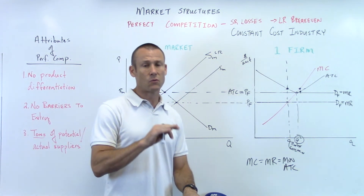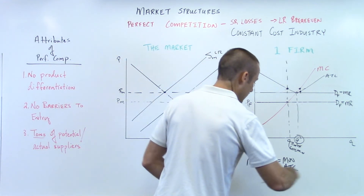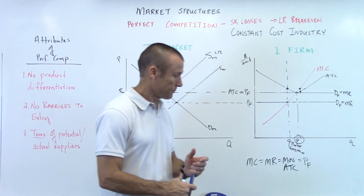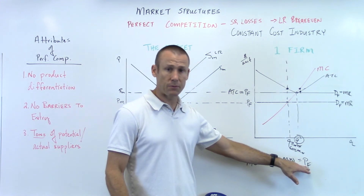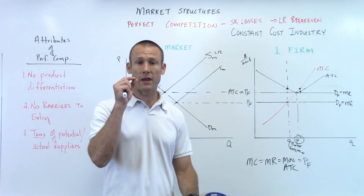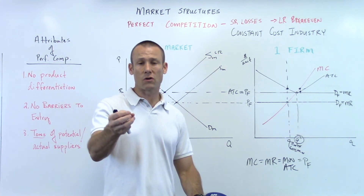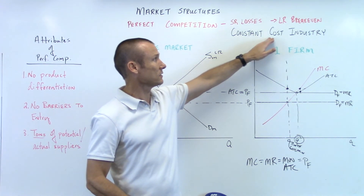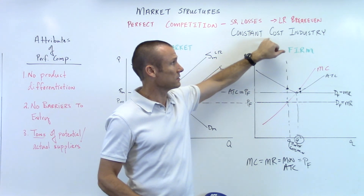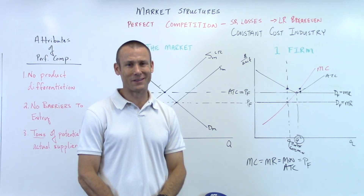At this situation we've got no profits. Price equals ATC — no profits, no losses. Zero economic profits means our revenue has covered all explicit and implicit costs, so we have positive accounting profits because accountants only look at explicit costs. That is how it works for a firm that was incurring losses in the short run — this is the long-run adjustment for a constant cost industry. Never shifted the MC or the ATC. Hopefully you followed along — we'll see you in the next video.